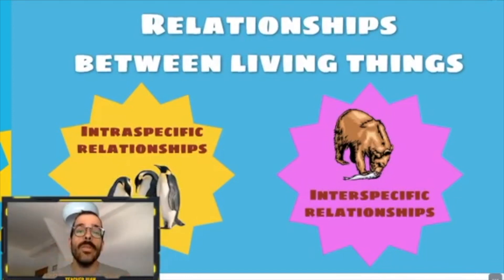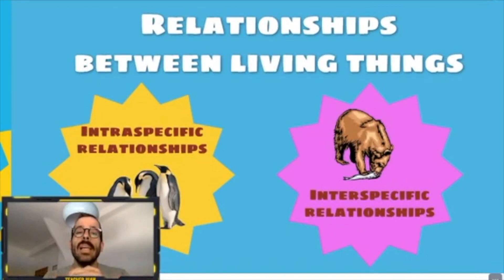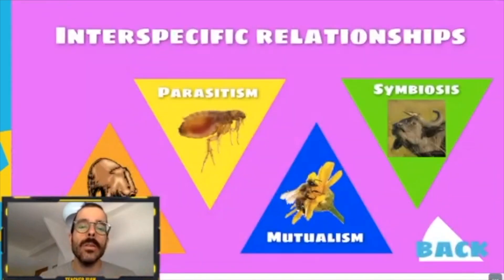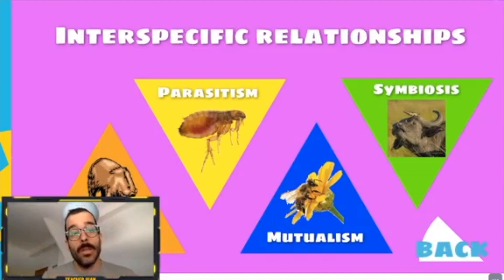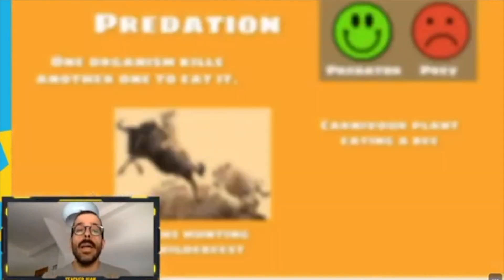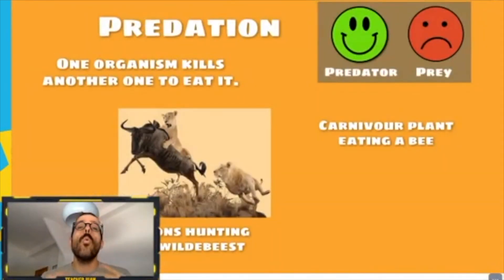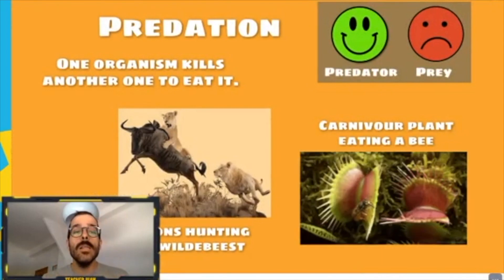Now, on the other hand, we have interspecific relationships — relationships between different species. We are going to study four of them. The first one is predation, which is when one organism kills another one to eat it.